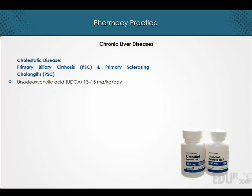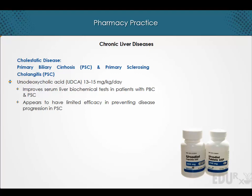13 to 15 mg per kg per day of ursodeoxycholic acid improves serum liver biochemical tests in patients with primary biliary cirrhosis and primary sclerosing cholangitis. It appears to have limited efficacy in preventing disease progression in primary sclerosing cholangitis. Note that there is no benefit to using high doses of ursodeoxycholic acid in the management of primary sclerosing cholangitis.